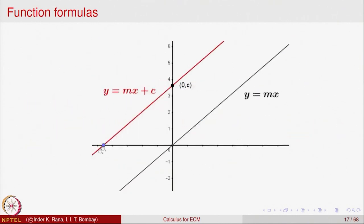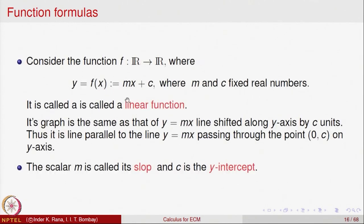This is the line y equal to mx plus C. If we drop C, the line y equal to mx is going to be parallel to this line — we have translated this graph up by C units. Depending on whether C is positive or negative, the graph will go up or down. This graph of y equal to mx plus C is called a linear function.